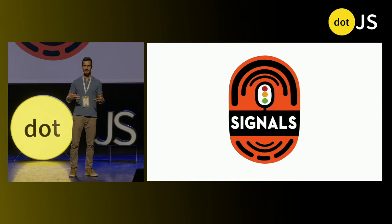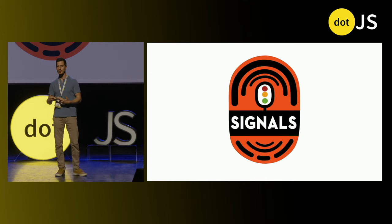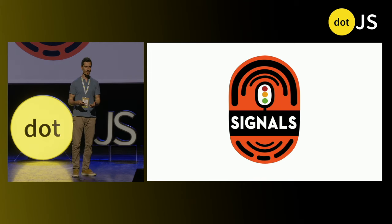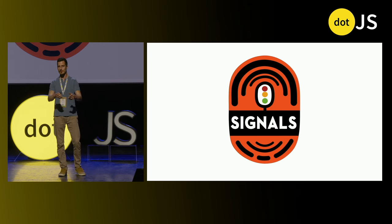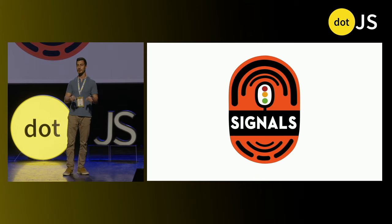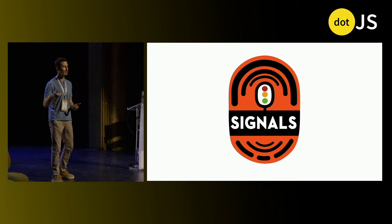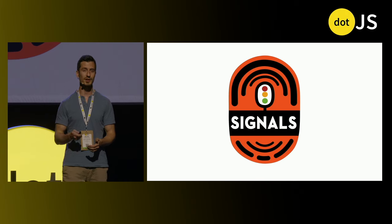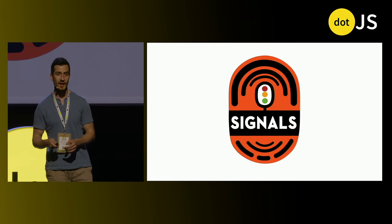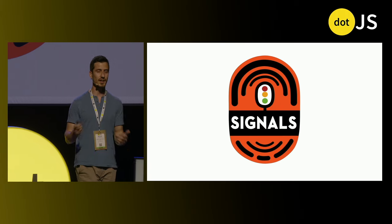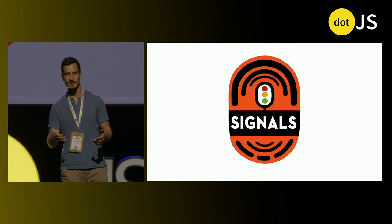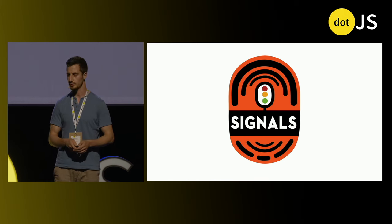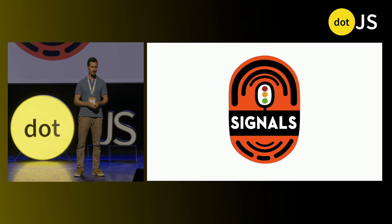Seeing that signals work well across these two different frameworks, we reached out to standardization bodies and looked for opportunities to introduce signals potentially to the web platform. The standard bodies reached out to other framework and ecosystem authors and we joined forces to introduce signals to the JavaScript language. As of right now, signals are at TC39 stage one, and the reference implementation uses Angular signals because it proved it can work across multiple frameworks and scales with YouTube, the second biggest website in the world.